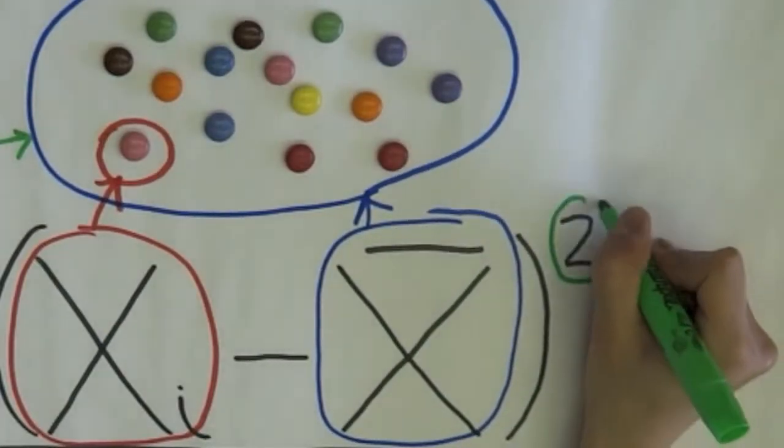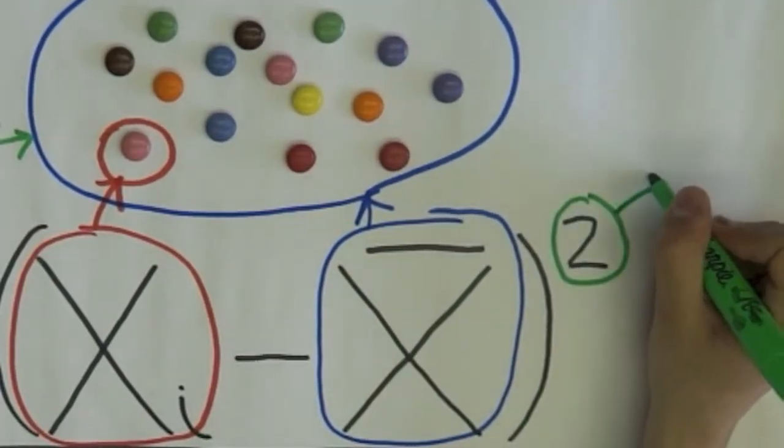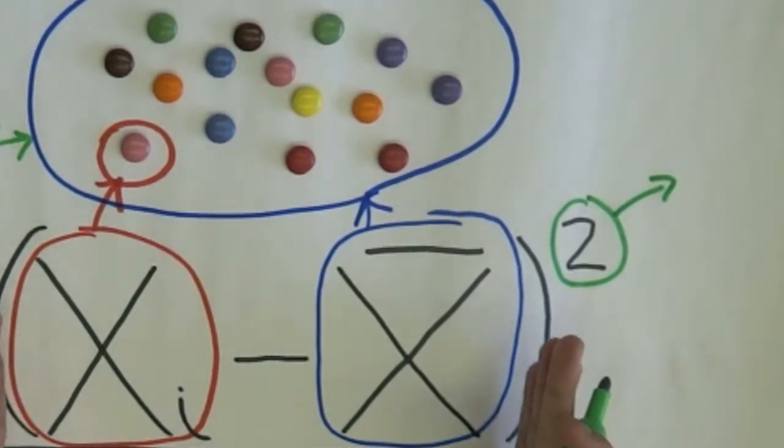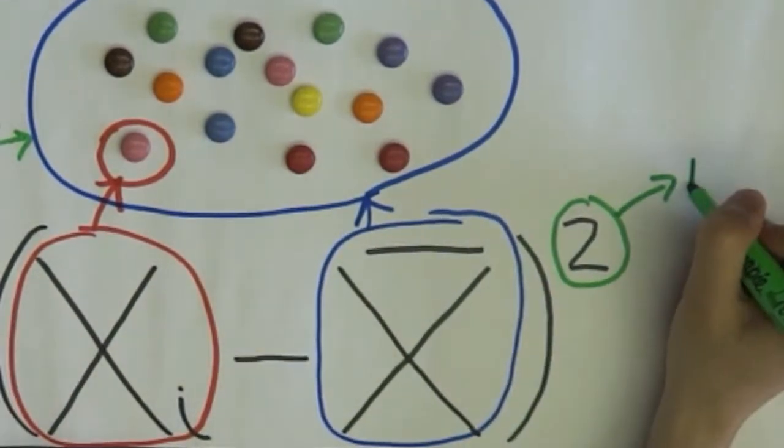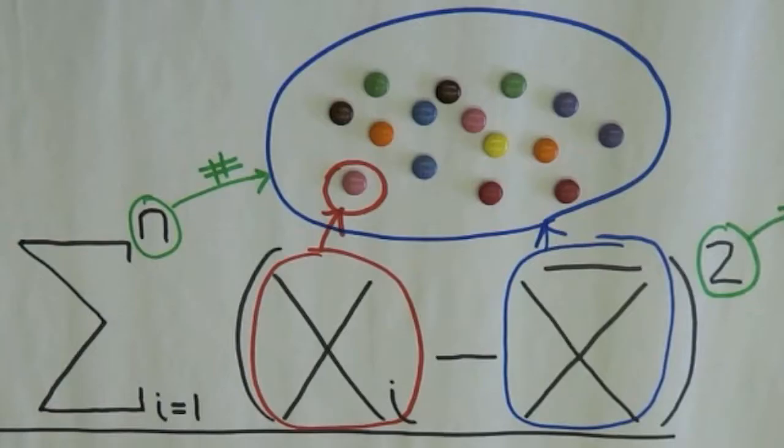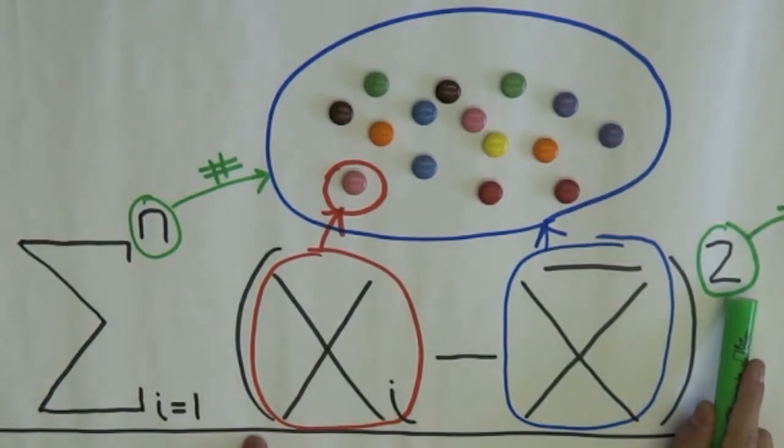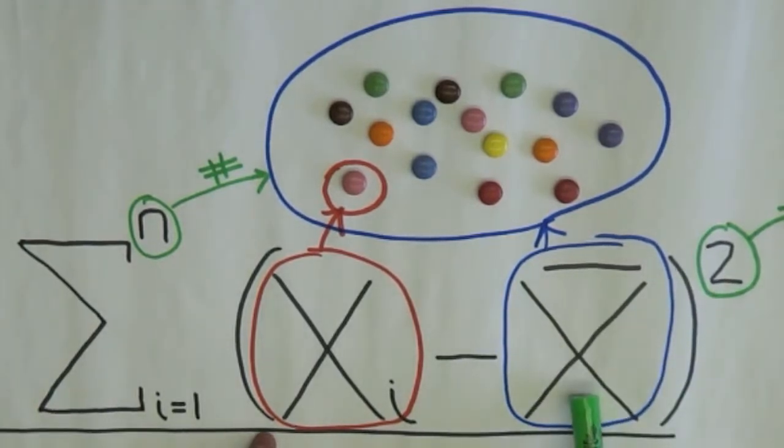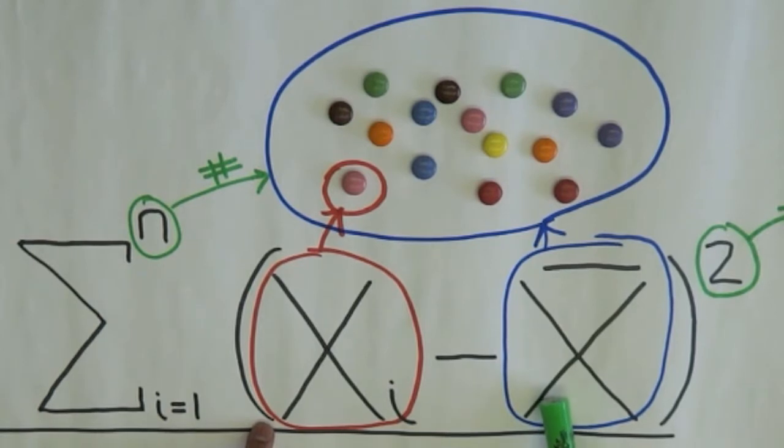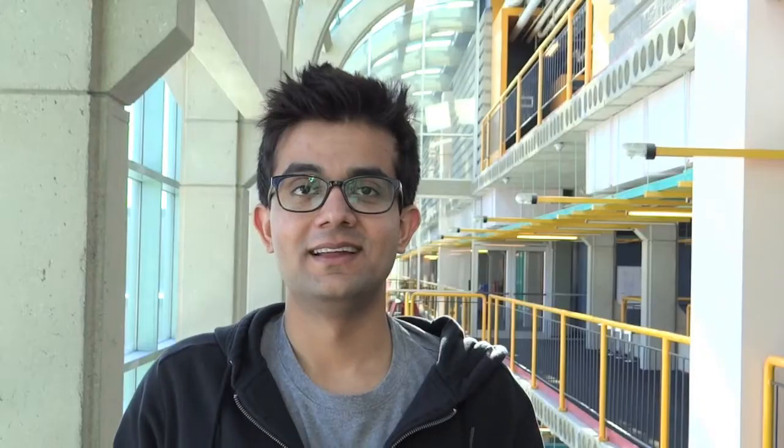The square is important because it always gives us a positive answer for this difference. If we did not use the square, then some of the differences would be positive while others would be negative. And if we simply added them, they would cancel each other out and give us an incorrect answer. And that is the reason we have to square them.